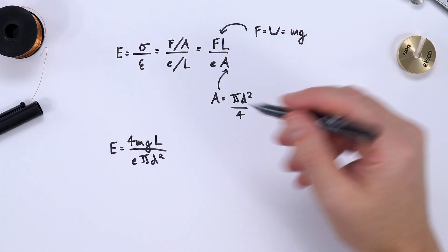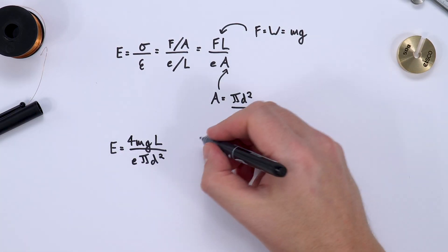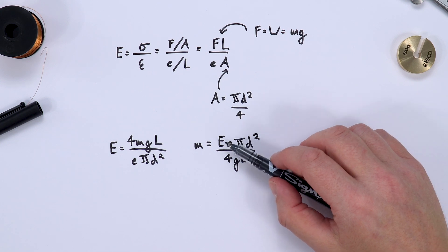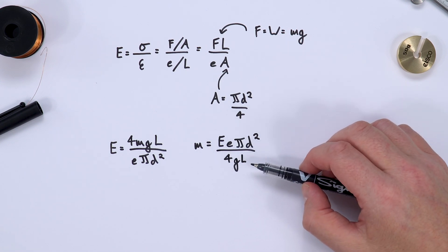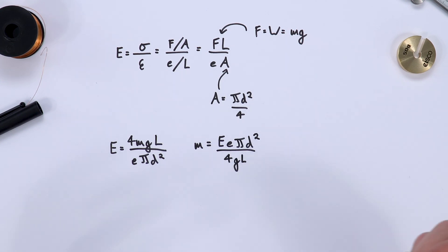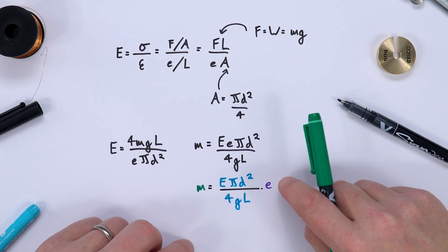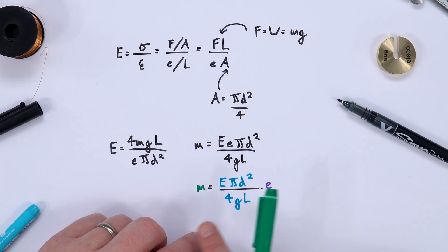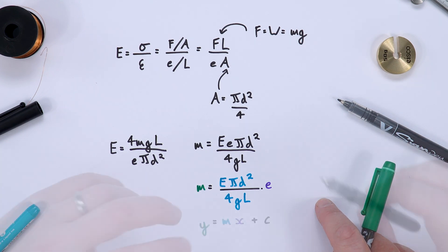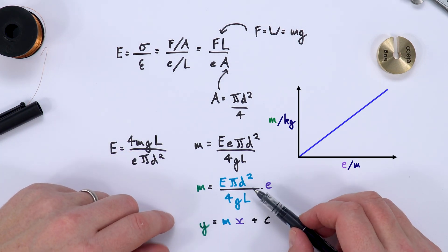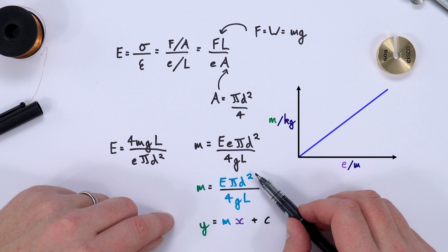We're going to alter the mass applied to the end of a wire to make it extend. Making m the subject gives mass = E·πd² / (4gL). We'll change the mass and measure the extension. If we plot extension on the x-axis and mass on the y-axis, the gradient equals E·πd² / (4gL).